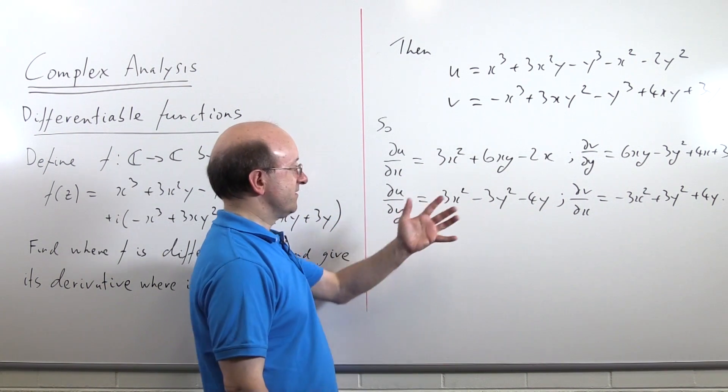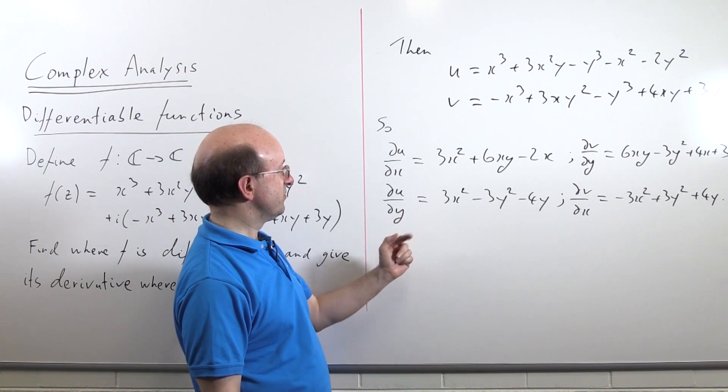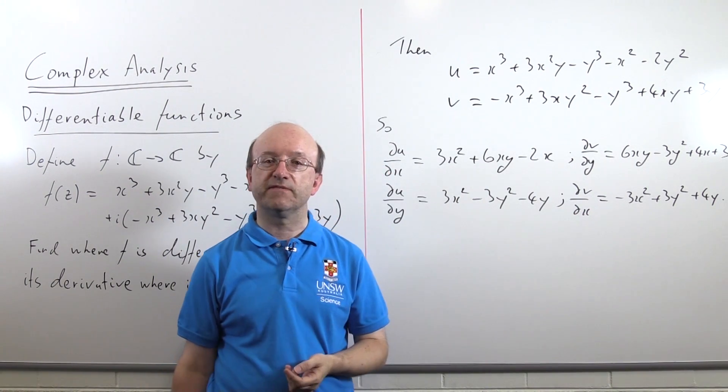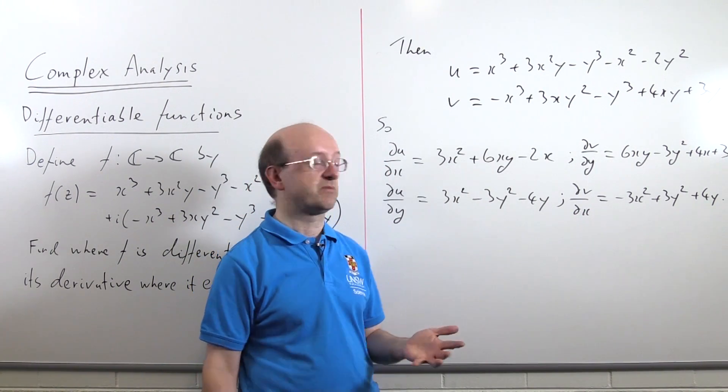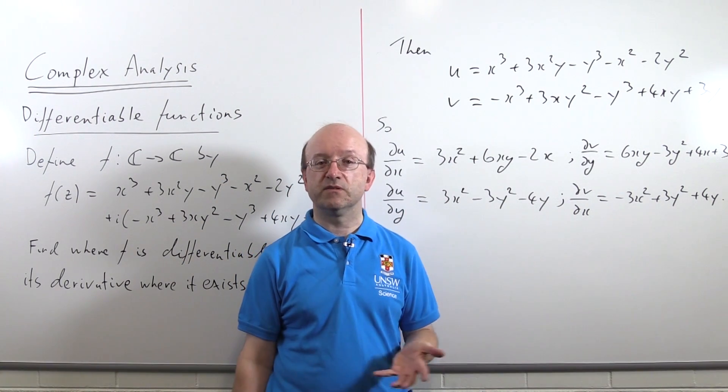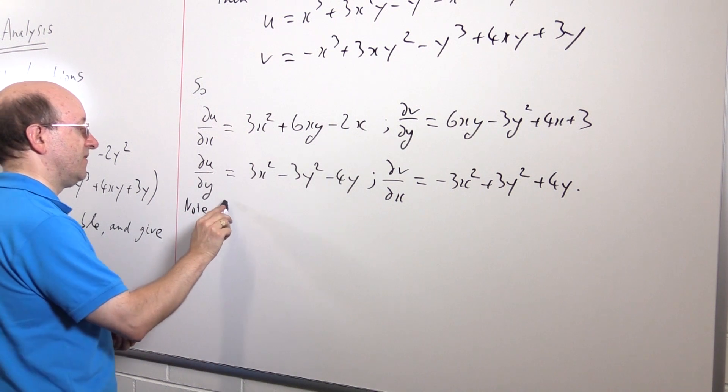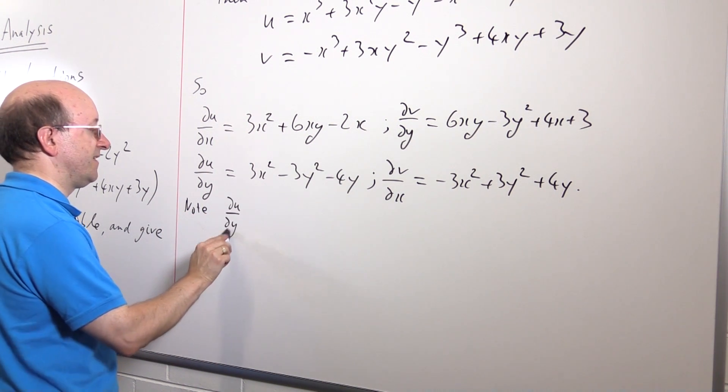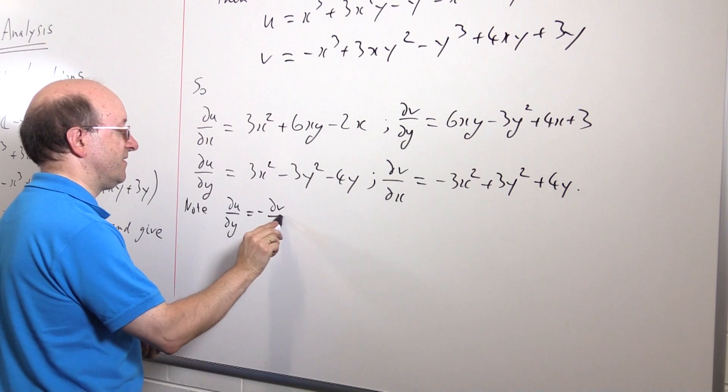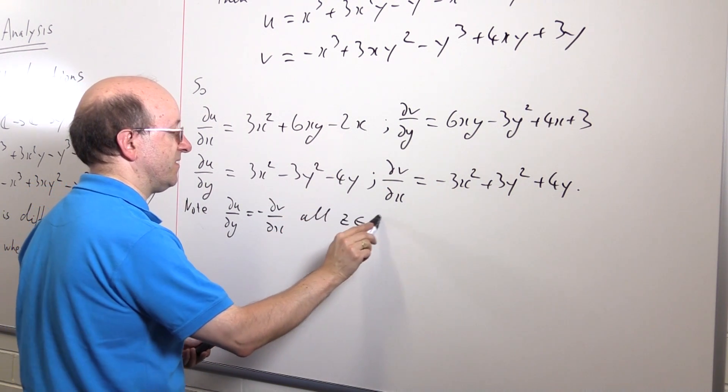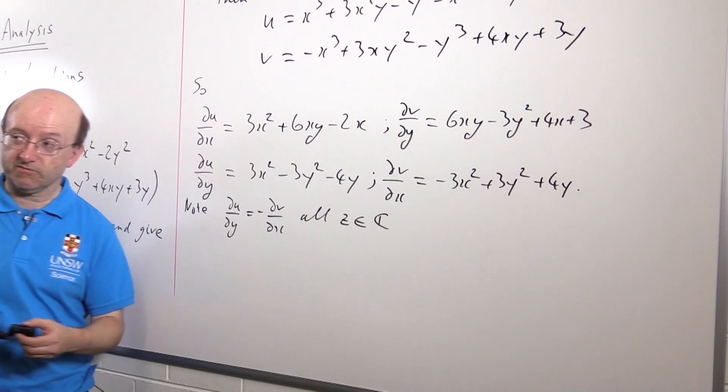Now, we can see immediately that the second of the Cauchy-Riemann equations, du dy equals minus dv dx, is satisfied for every x and y over the whole complex plane. So, that Cauchy-Riemann equation doesn't tell us anything. Note, du dy equals minus dv dx for all complex numbers z. Well, z is x plus iy, remember.